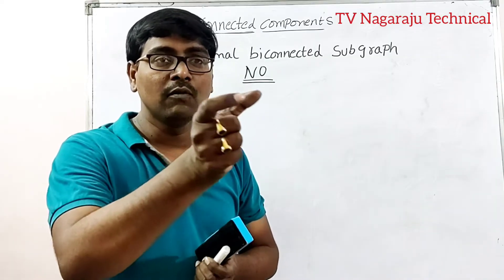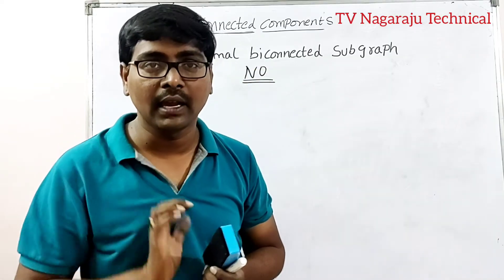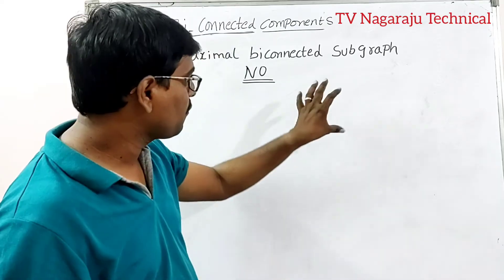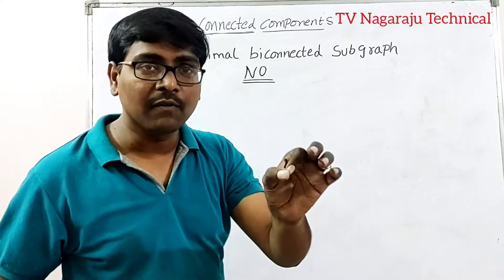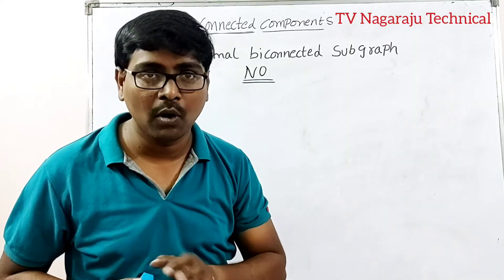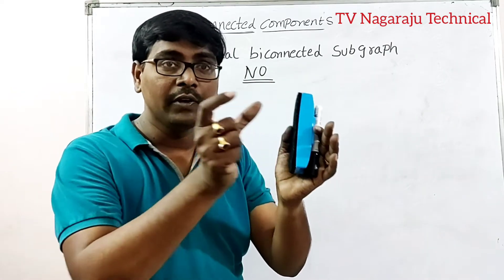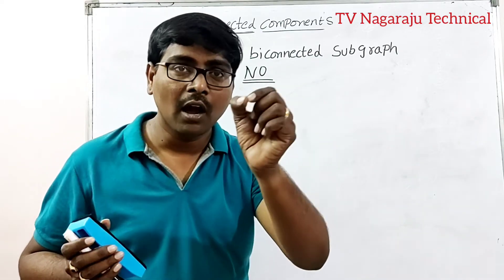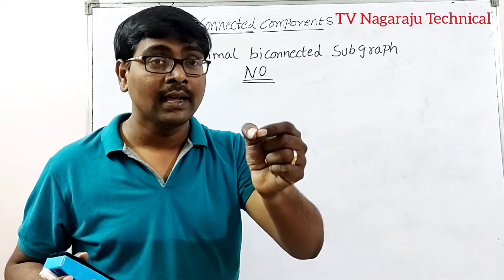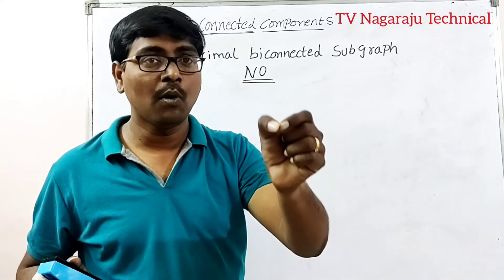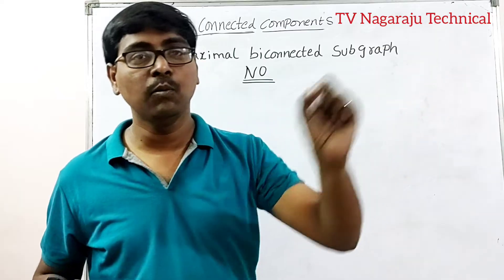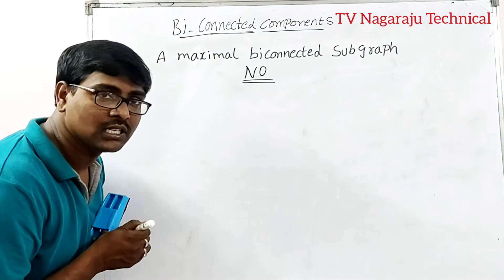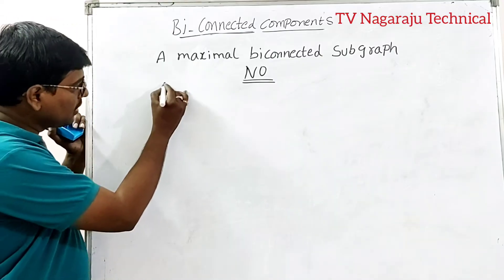Given a graph, to convert it into bi-connected components, the procedure is simple: first identify all the articulation points, then divide the graph into multiple subgraphs. The articulation point is included in both the subgraphs when dividing.